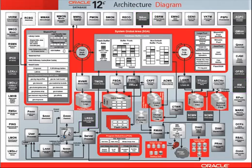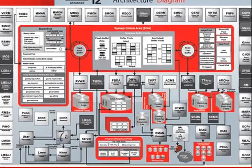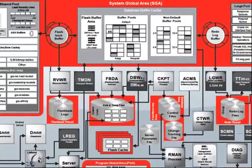Inside one square element, you may see two names. This is to indicate the second, in smaller letters, is a slave of the first. For example, LG processes, new to 12c, are redo log writer slaves.